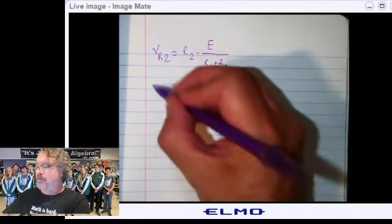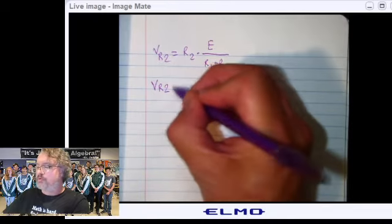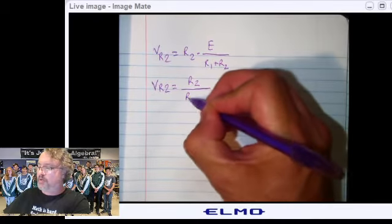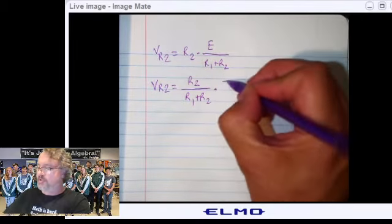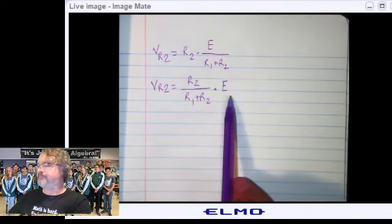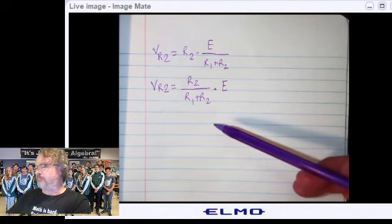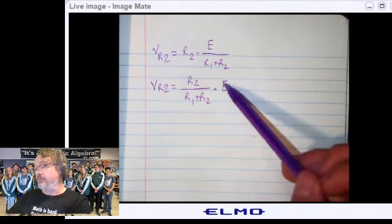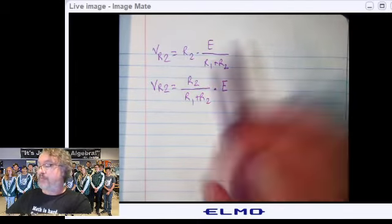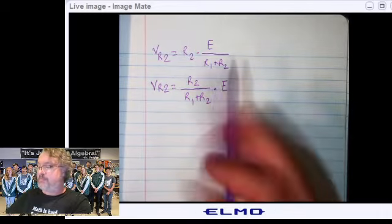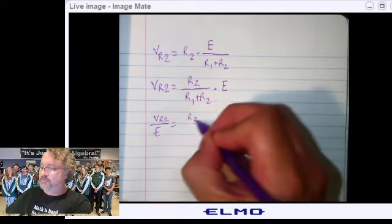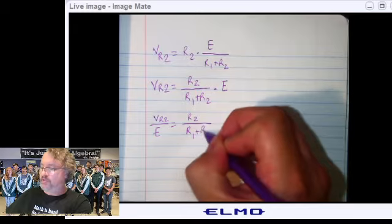Okay, let's do a little bit of math here. I can use algebraic manipulation. So, I'm going to rewrite it as R2 over R1 plus R2 times E. It's more like the associative. Anyway, if I now divide both sides by E, that's going to give me VR2 over E is equal to R2 over R1 plus R2.